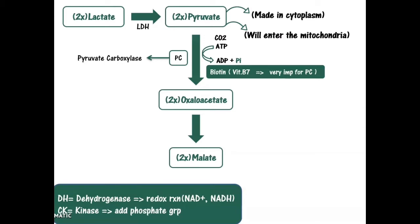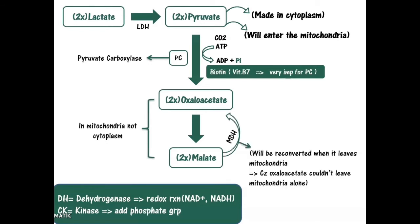For that reason, inside the mitochondria we convert oxaloacetate into malate by malate dehydrogenase, and this malate has the ability to exit the mitochondria. Once malate is outside the mitochondria, it will be reconverted into oxaloacetate by malate dehydrogenase. Now the oxaloacetate is present in the cytoplasm.